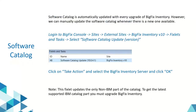Coming to the software catalog — the software catalog contains signatures for a range of software to identify the installed applications in your infrastructure. The software catalog is automatically updated during every upgrade of BigFix Inventory. However, you can manually update it whenever there is a new content release or for troubleshooting purposes. Please note this will update only the non-IBM part of the software catalog; to update the IBM part, you have to upgrade BigFix Inventory to the latest version.